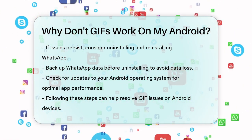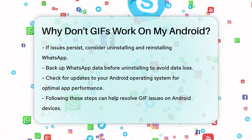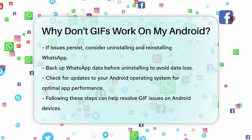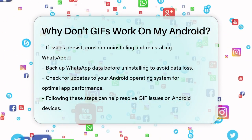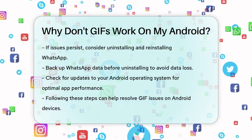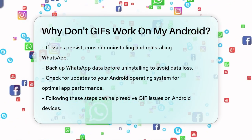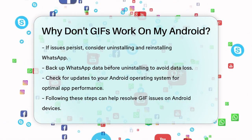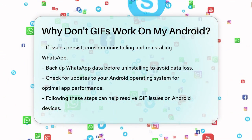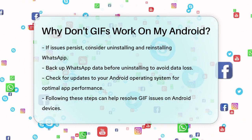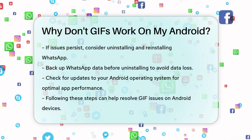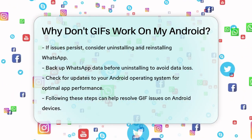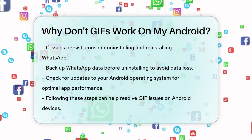Lastly, an outdated operating system can interfere with app functionality. Ensure your Android OS is up to date by going to Settings, scrolling down to System or About Phone, and checking for any available updates. By following these steps, you should be able to resolve the issue of GIFs not working on your Android device. Remember, it's often the simple solutions that fix the problem, so start with the basics and work your way up.